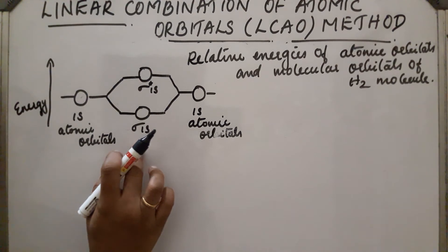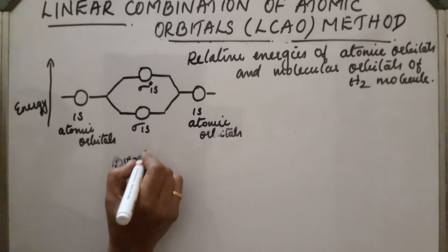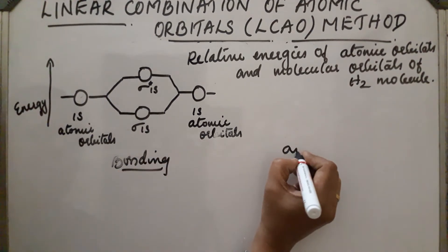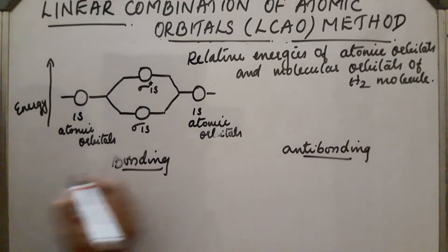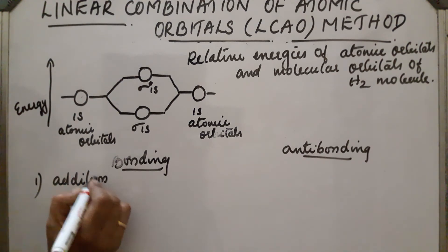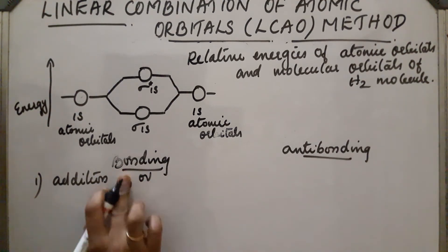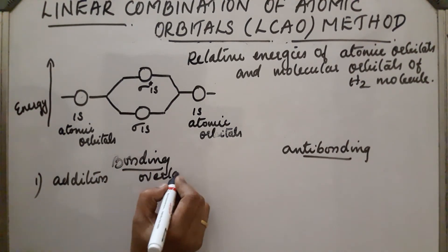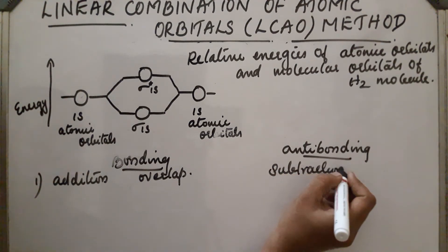Similarly, in the case of 2s, 2p, etc., we can represent the energy diagram like this. Next, what are the differences between bonding and antibonding molecular orbitals? First point: in bonding, addition overlap of atomic orbitals takes place, while in antibonding, subtraction overlap takes place.